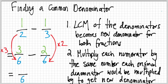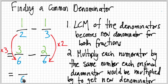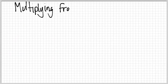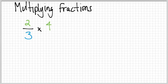For subtraction it's the same thing — I just change this to a subtraction problem. The step of finding the common denominator doesn't change at all; it's still six. The new denominator stays the same. All we do differently is three minus two instead of three plus two. Three minus two is one, so one-half minus one-third is one-sixth.